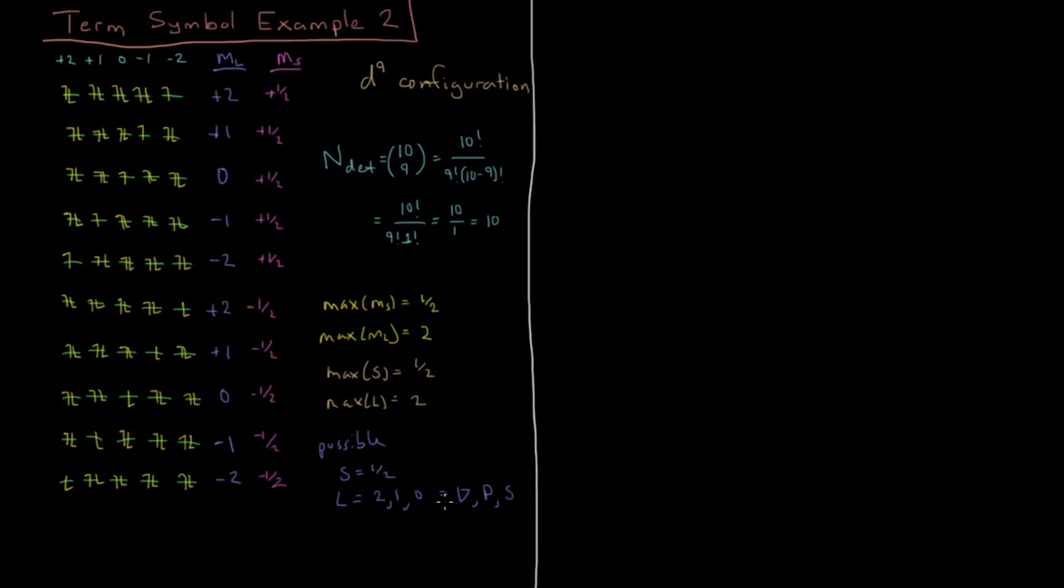Given these possible values of S and L, all combinations of term symbols are possible. For S of 1/2, our multiplicity 2S plus 1 equals 2 times 1/2 plus 1, which is 2 - a doublet. That's our only possible multiplicity. For L we can have D, P, and S, so our possible term symbols are doublet D, doublet P, and doublet S.